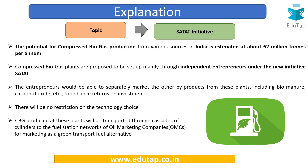The potential for CBG production from various sources is estimated at about 62 million tons per annum. Individual and independent entrepreneurs under this initiative will set up these plants. Entrepreneurs will be able to separately market the byproducts such as bio-manure and carbon dioxide. There is no restriction on technology choice. Oil marketing companies have also been signed up in this agreement, where fuel station networks will be used for marketing this green transport fuel.